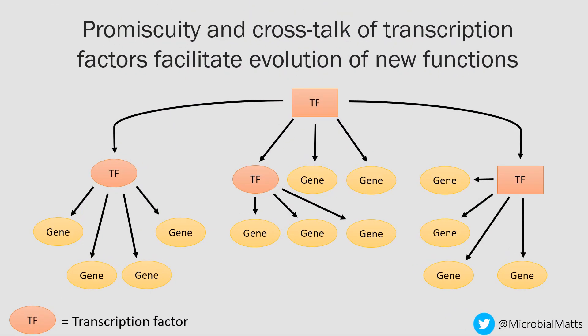My PhD project focuses on the evolution of transcription factors within these networks. A key property of these regulators, which is thought to facilitate their evolution, is functional promiscuity or crosstalk. This is where a transcription factor binds the promoter for a gene that it does not normally regulate. This is possible when the two transcription factors involved share a degree of structural homology, so are able to bind similar promoter sequences.